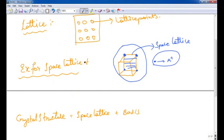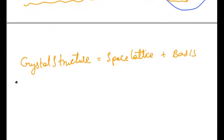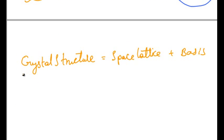Now that we know what is a Lattice and Space Lattice, we need to know what is a Crystal Structure. A Crystal Structure can be defined as a combination of Space Lattice and Basis.